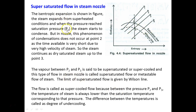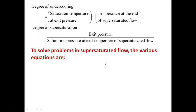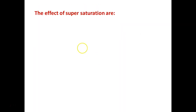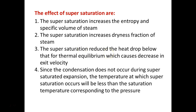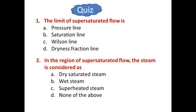For a theory question on metastable flow in a steam nozzle, draw the H-S diagram, explain supersaturation up to the Wilson Line, write the first and second paragraphs explaining the phenomenon, and list the effects of supersaturation. Equations are not required for the theory part. Quiz: the limit of supersaturated flow is given by the Wilson Line. In the region of supersaturated flow, the steam is considered as dry saturated steam — both correct answers.